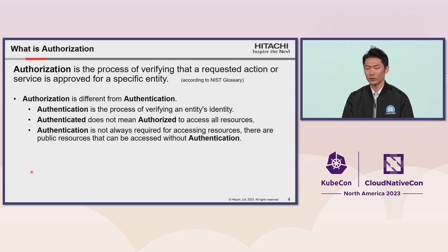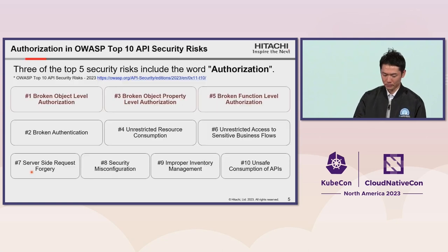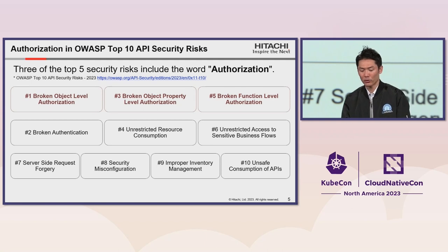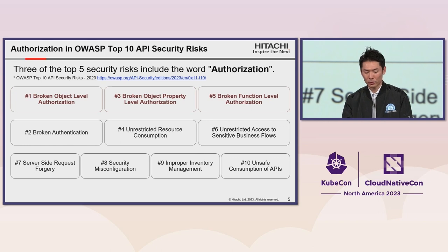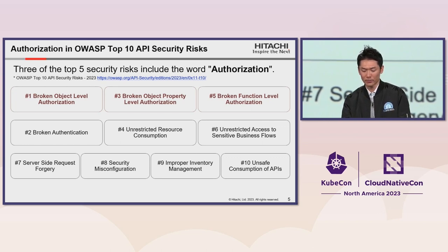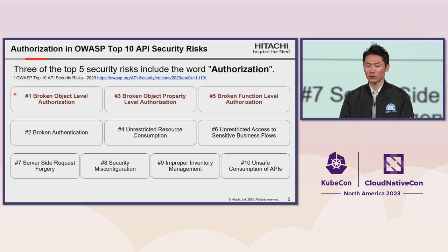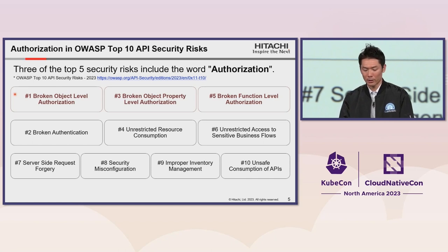Today I will dive into authorization. Authorization is becoming more and more important to security considerations. For example, in OWASP's Top 10 API Security Risks, three of the top five security risks include the word authorization: number one, broken object level authorization; number three, broken object property level authorization; and number five, broken function level authorization.